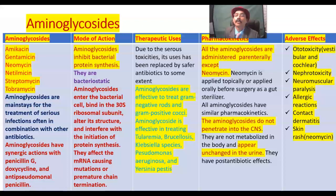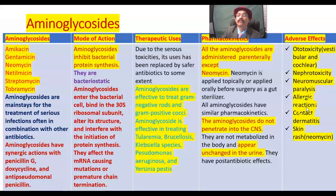Neuromuscular paralysis is another adverse effect, which is very pronounced in cases of myasthenia gravis. This is usually reversible. Allergic reactions such as contact dermatitis and skin rash may be seen, particularly with neomycin.